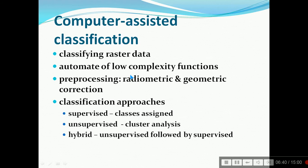CAC—computer assisted classification—means classifying raster data, differentiating into different categories. This includes automation of low complexity functions, then pre-processing that is radiometric and geometric correction, and then classification approach. We have supervised and unsupervised: supervised has classes assigned, unsupervised uses cluster analysis, and finally the hybrid of both, supervised followed by unsupervised and vice versa.